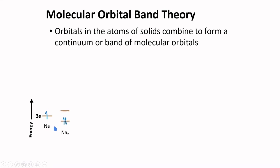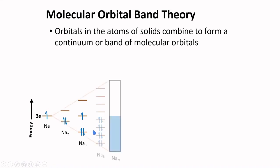Two sodium atoms can have this arrangement — the two 3s orbitals combine to form two molecular orbitals. Three sodium atoms can have this arrangement, and eight sodium atoms can have this one. Assuming a large number of sodium atoms present in a sample, there will be an extremely large number of molecular orbitals, with energies so closely spaced that they form a continuum or band of molecular orbitals.